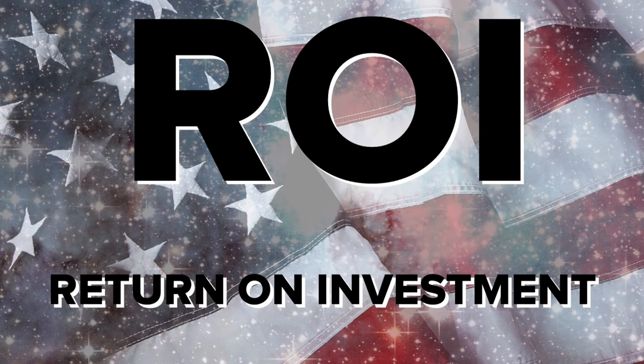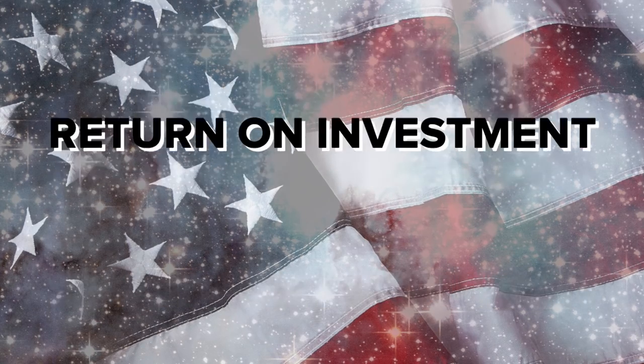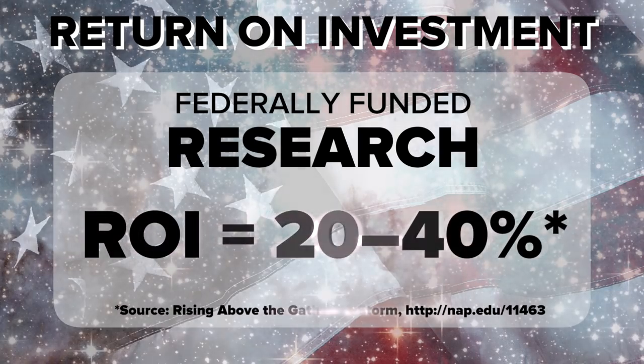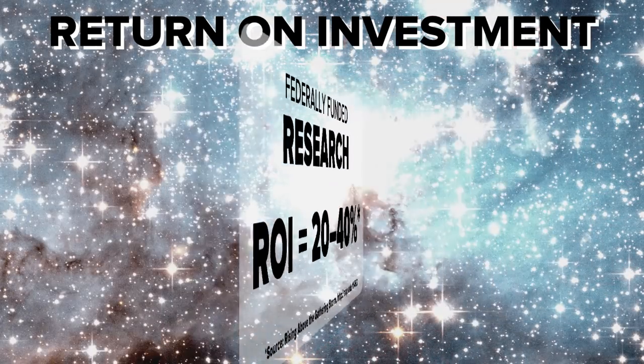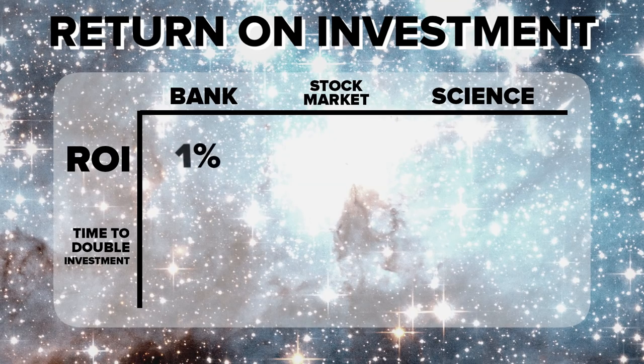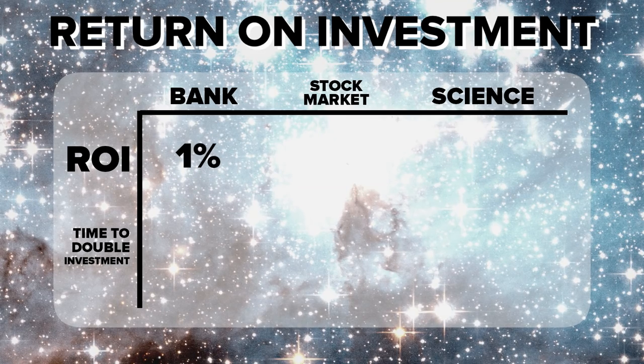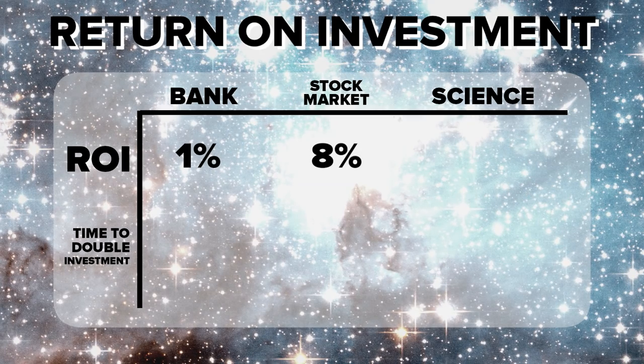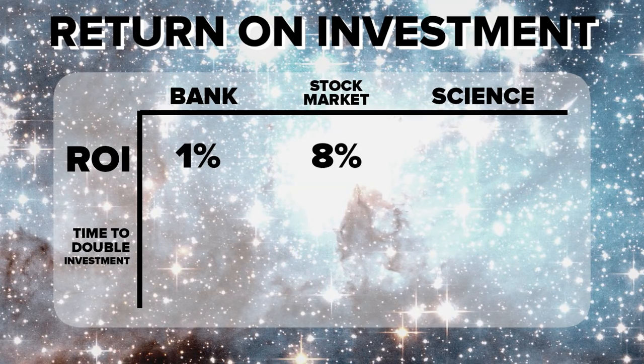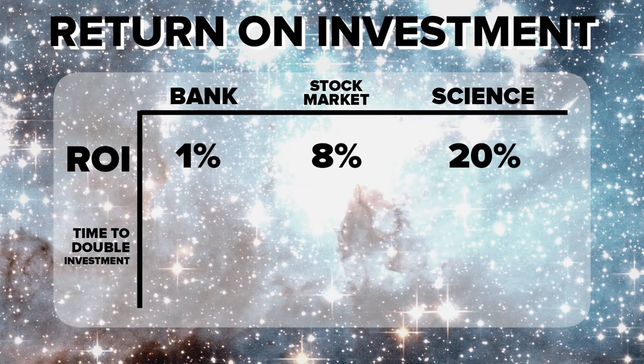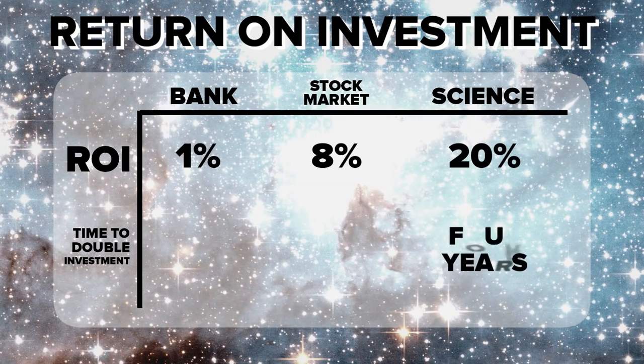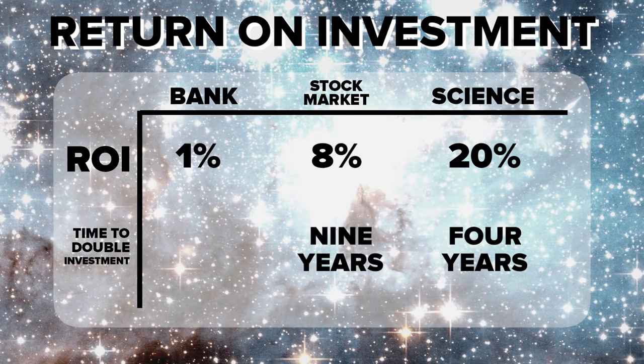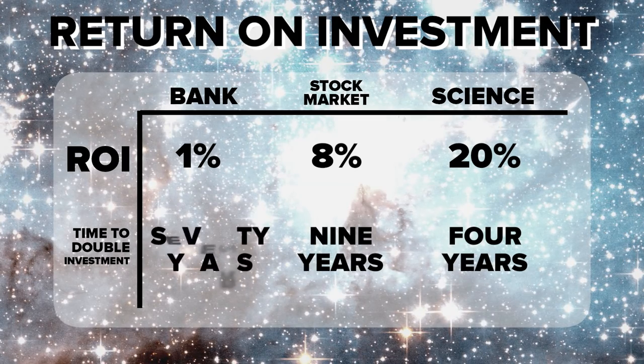While it's difficult to quantify exactly, most estimates put the annual return on federally funded research at between 20 and 40 percent. Think about that. If you're lucky enough to have money in the bank, they're paying about 1 percent these days. Even the long-term average for the stock market is about 8 percent. Funding science is way better than that. Even if we take the lowball estimate of 20 percent return on investment, after a mere four years, you double your investment. Compare that to the 9 years it takes to double your money in the average stock market, and 70 years it would take in a bank.